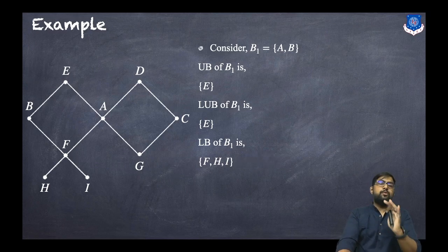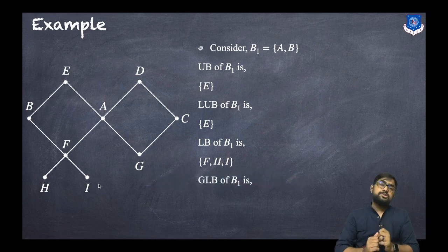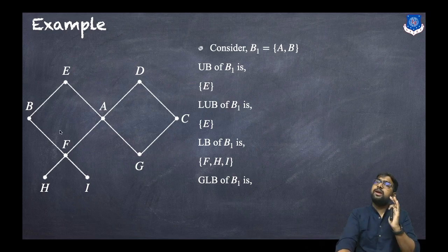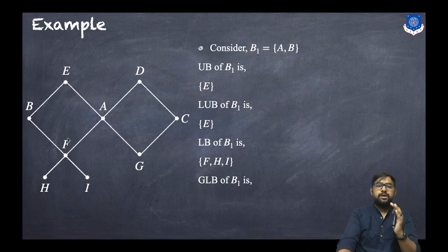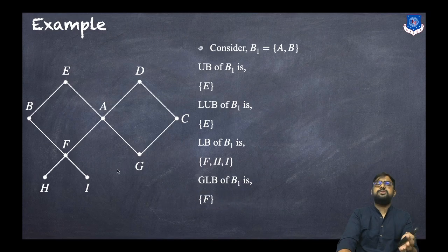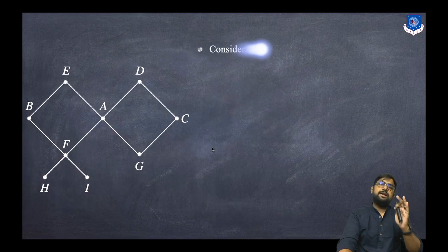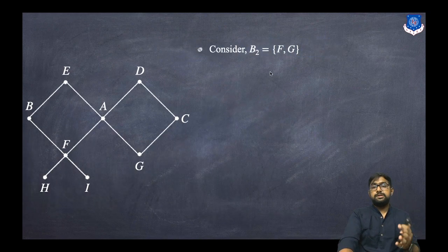We want to pick the Greatest Lower Bound among f, h, and i. The greatest means what is in the highest position. Just by looking at the figure, f is in the top position, so f is the Greatest Lower Bound. Now consider the same graph with a different set: B2 = {f, g} — here is f and this is g.